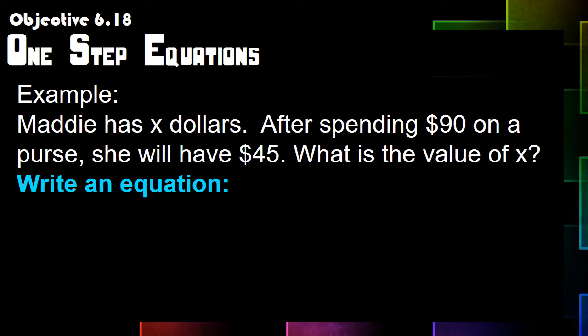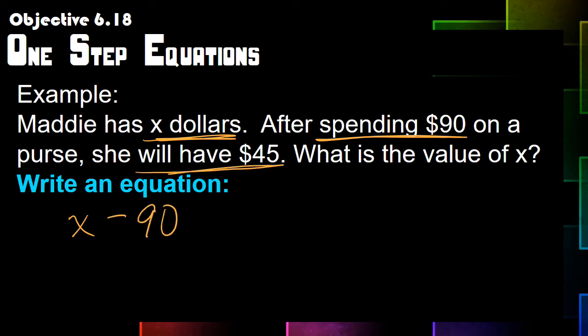Second example: Maddie has X amount of dollars. After spending ninety dollars on a purse, she will have forty-five dollars left. What is the value of X? We write our number sentence: Maddie starts with X dollars, spends ninety, so we're subtracting — X minus ninety equals forty-five. Now we do the inverse of subtraction, which is addition, so we add ninety to both sides.